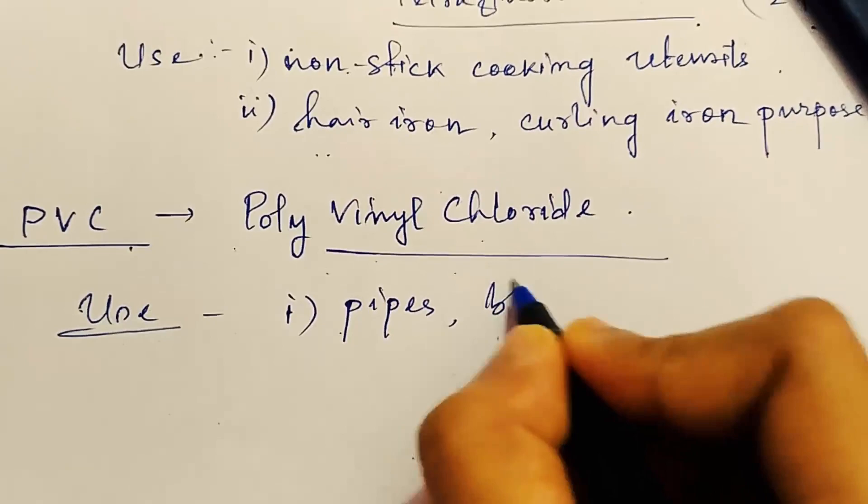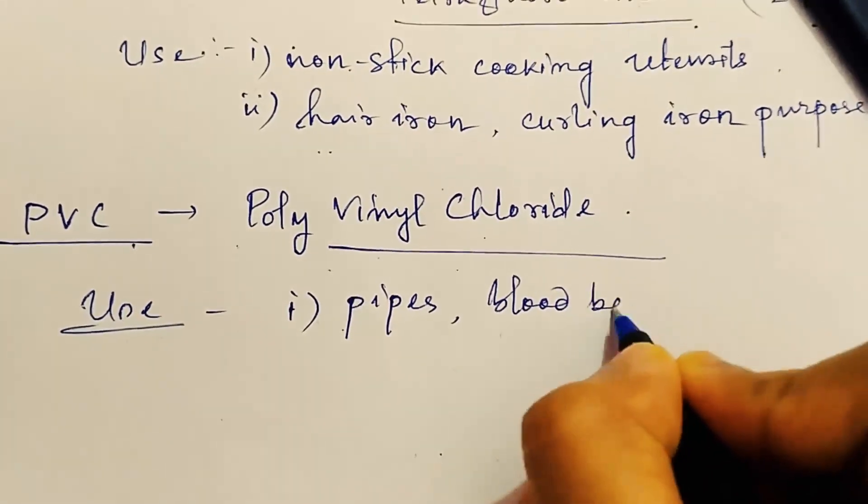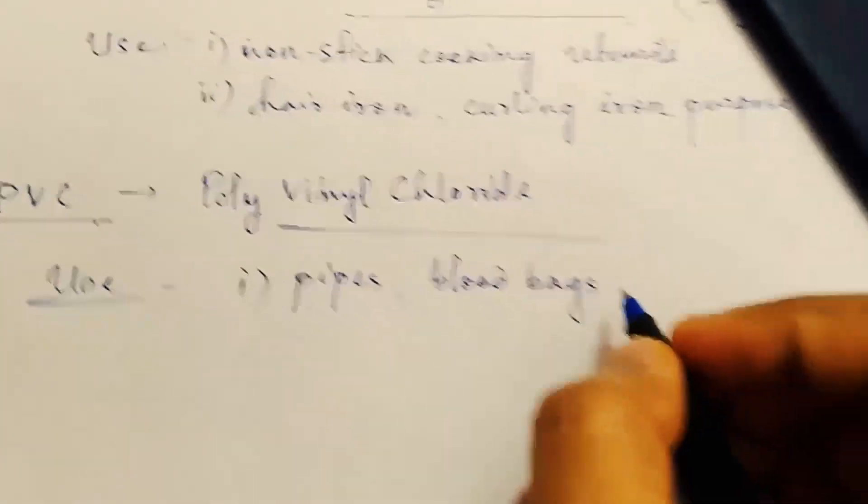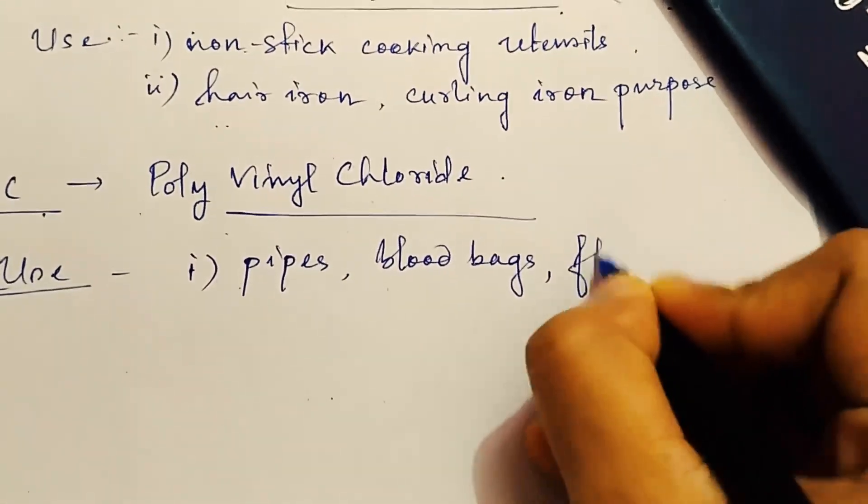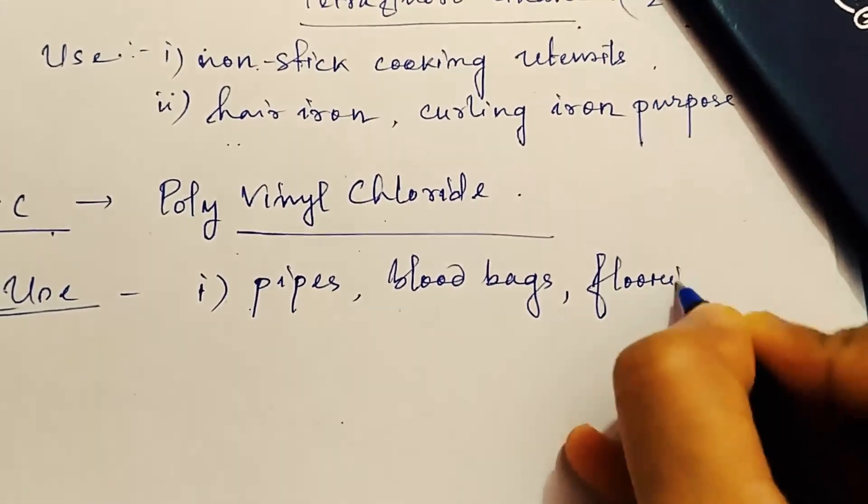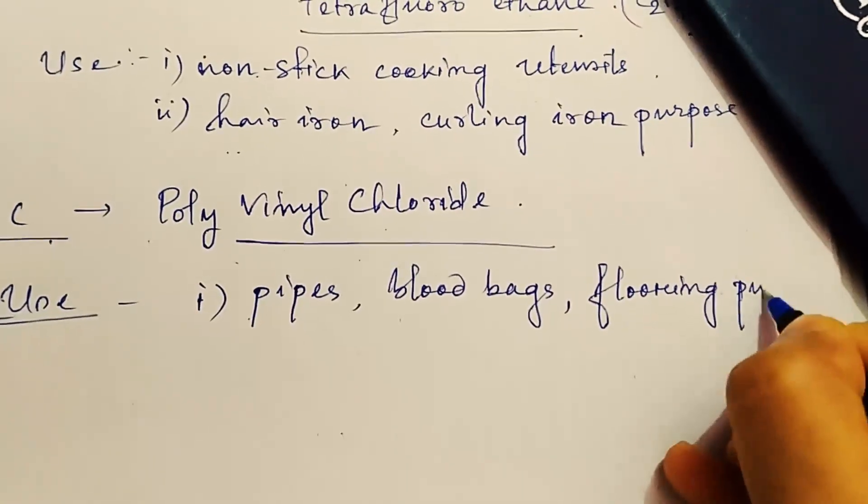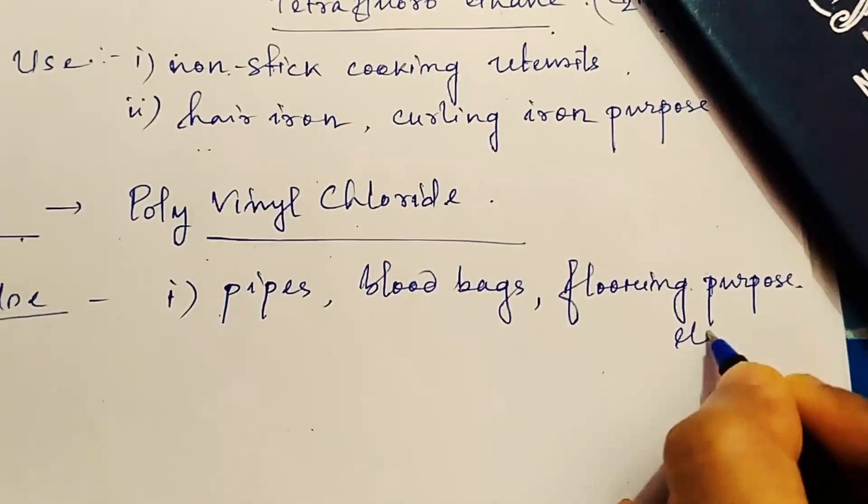Now this polyvinyl chloride, that is PVC, is used in making pipe, then blood bags which is used to store the bloods in the hospital, then flooring purpose.